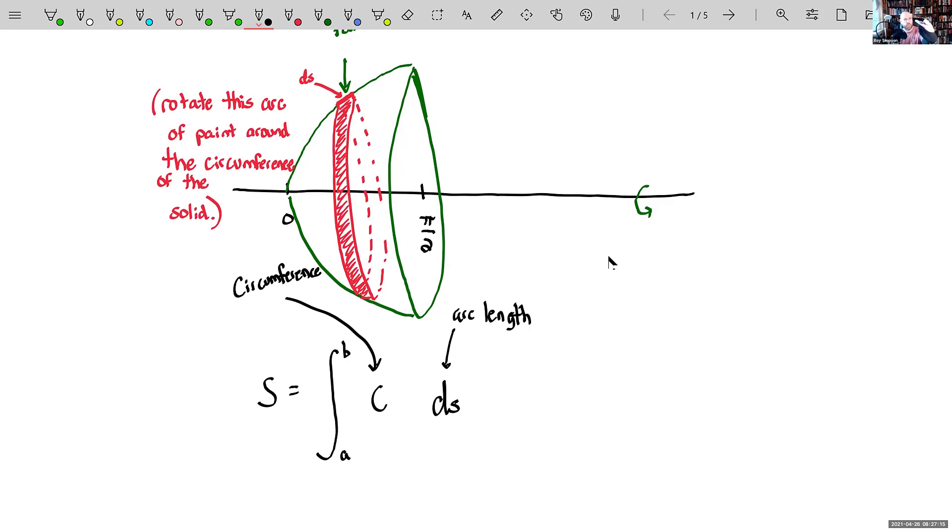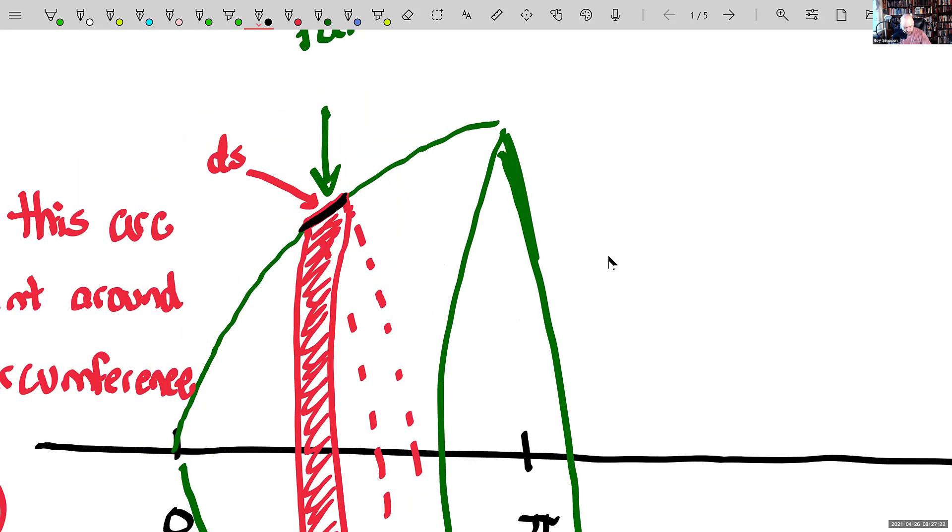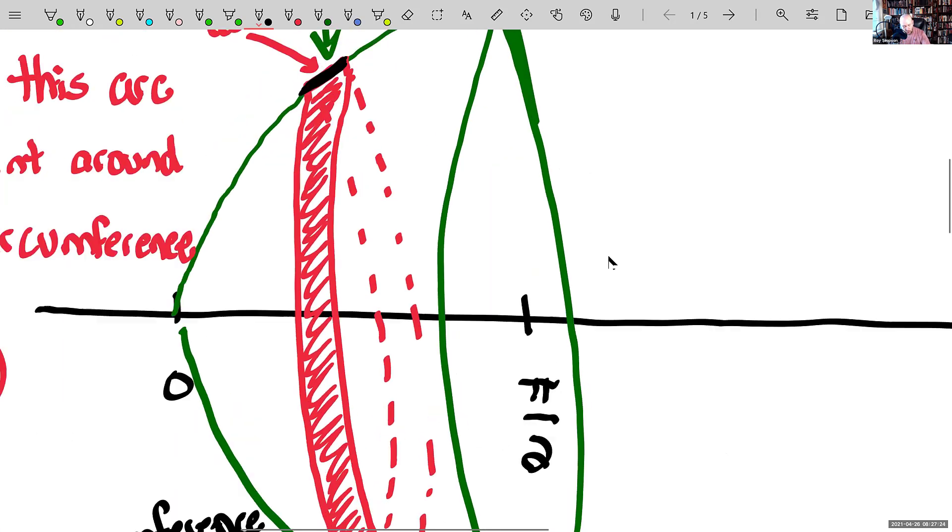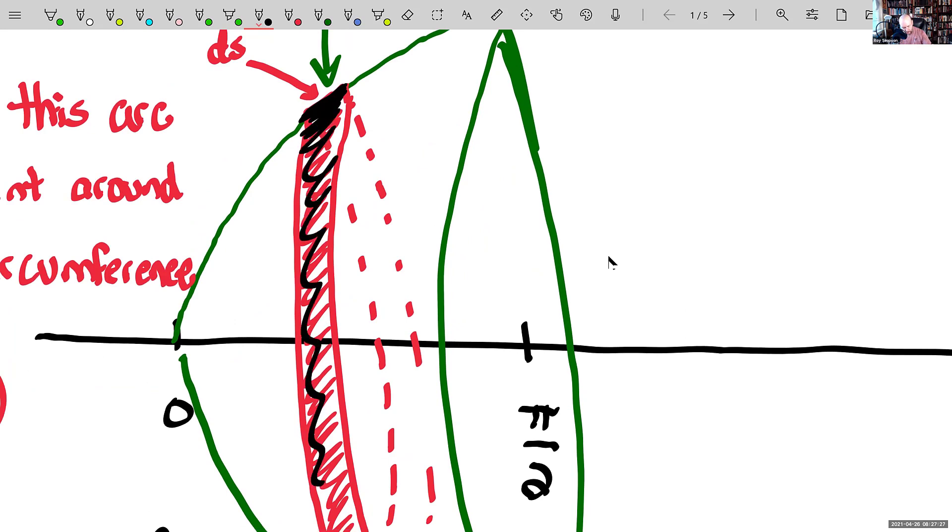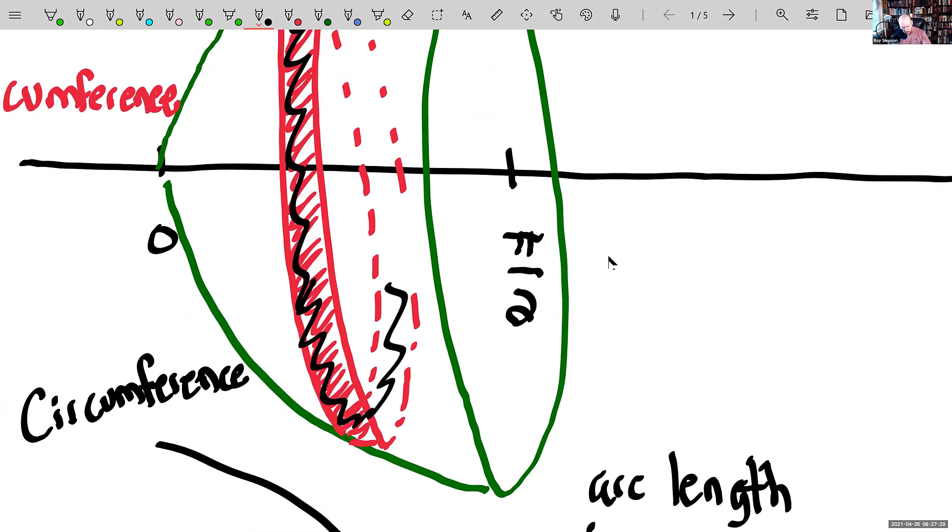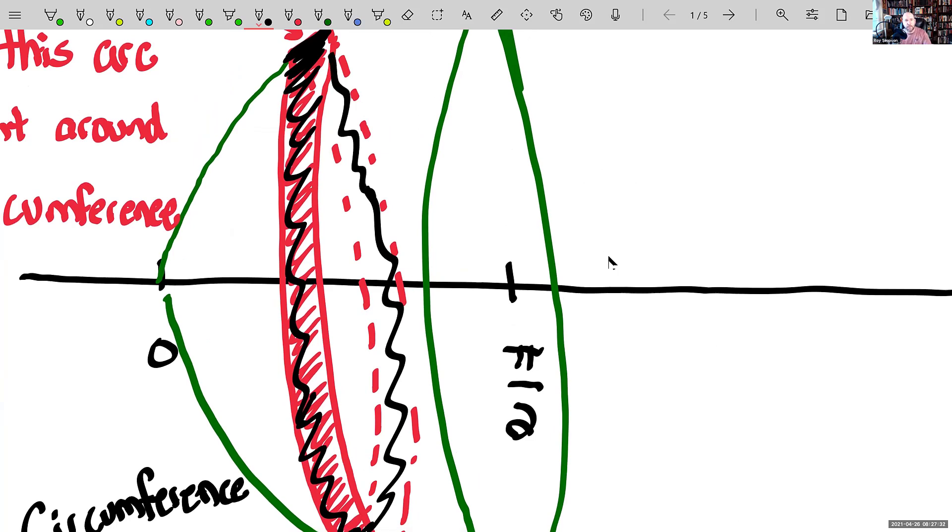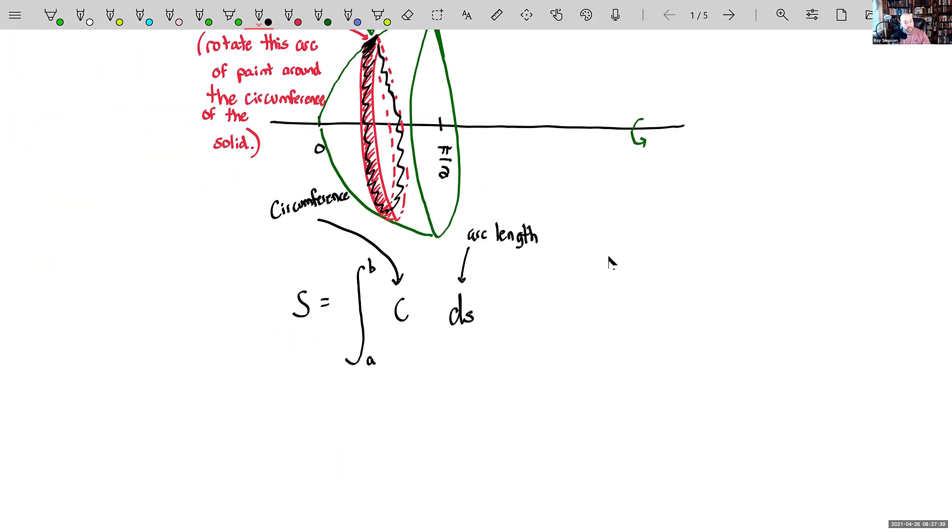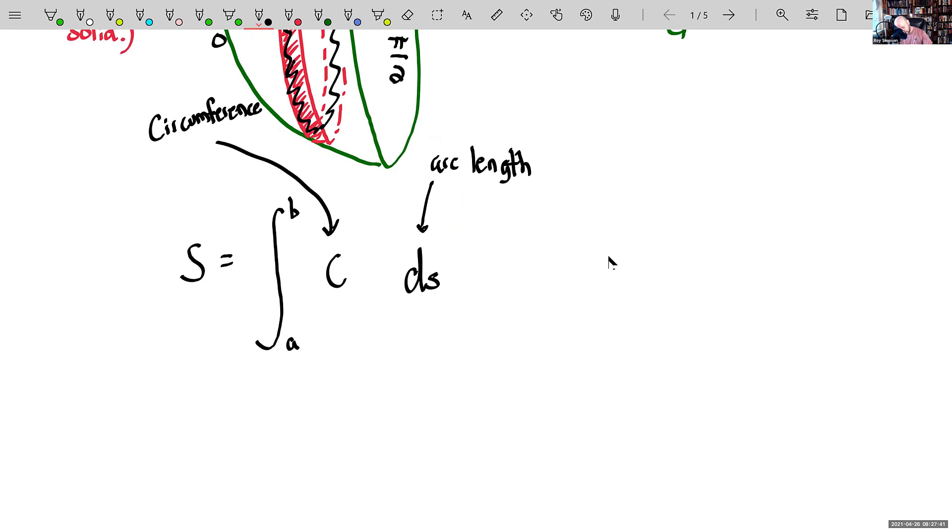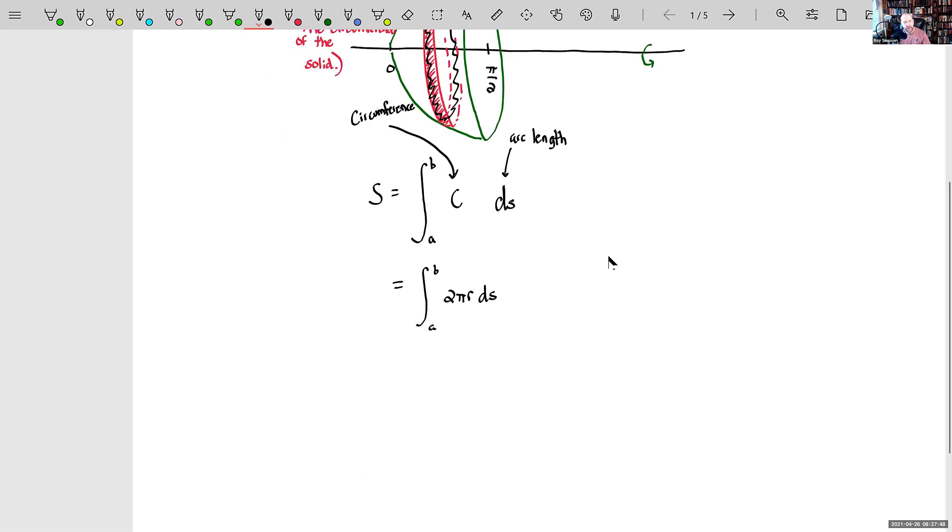And we're going to do that from A to B. Does that make sense that you take this little paint strip right here? It's better when I'm in a classroom, but does it make sense that you're taking this little paint strip right here and then you're basically saying, okay, just rotate that paint strip all the way around through this circumference. And that will be how much paint I use. It's just that width times the circumference. That's it. Now remember, circumference is 2 pi r, isn't it? So this is going to be the integral A to B of 2 pi r ds. Done.